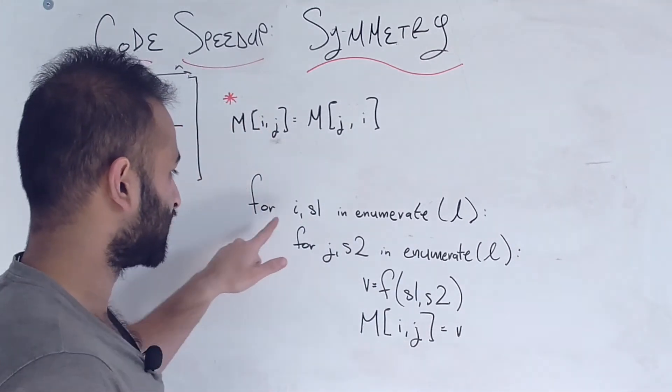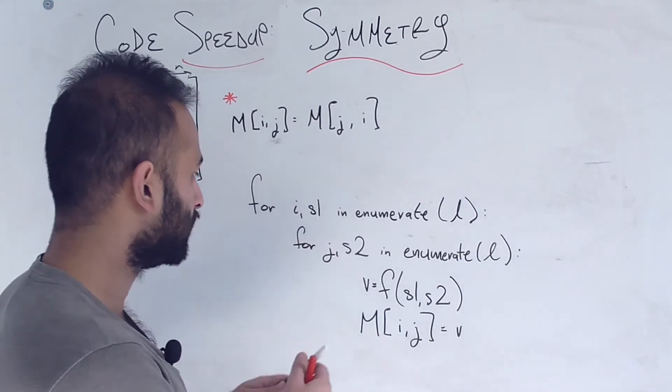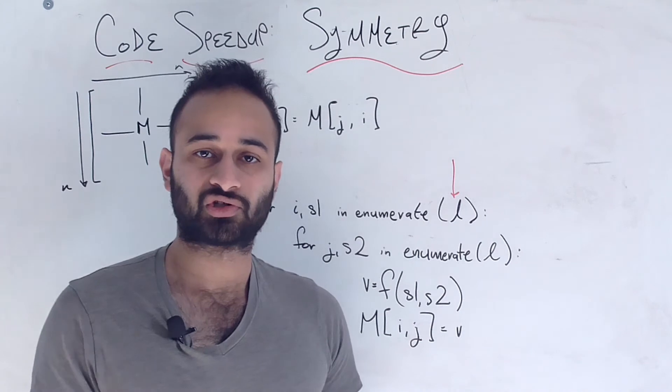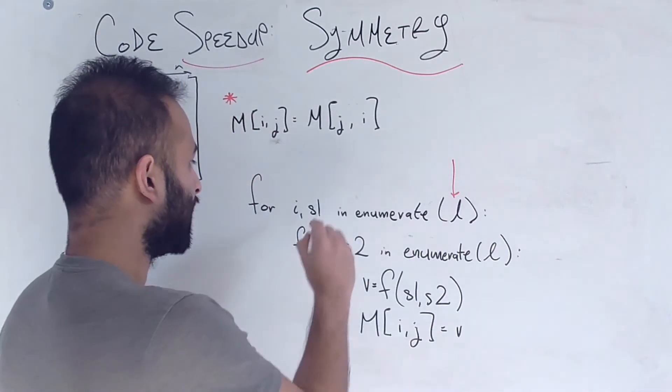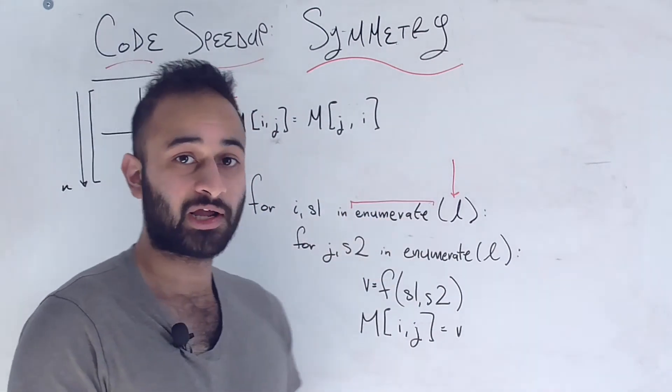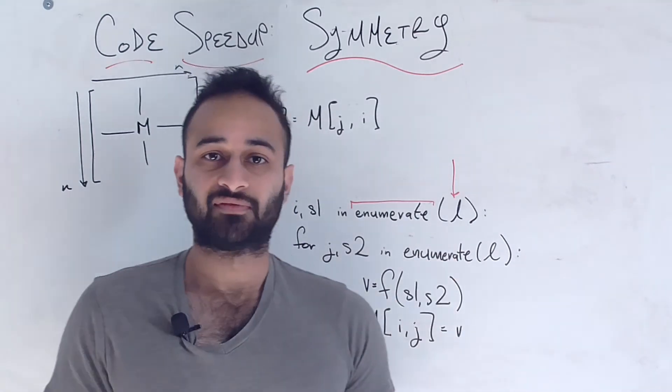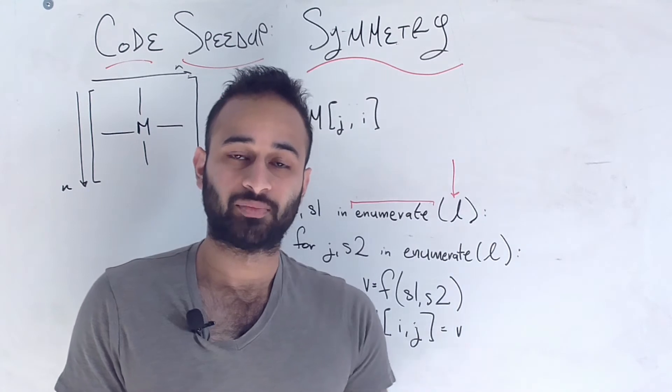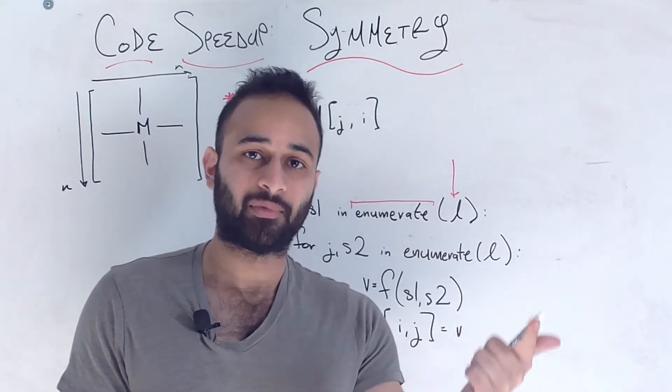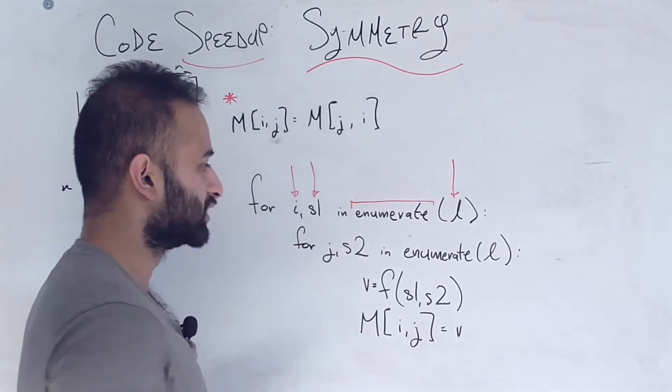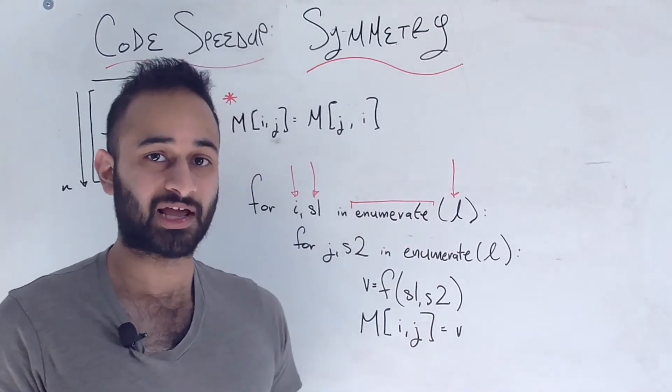So we iterate, we say for i comma s1 in enumerate. And then let's say this l is my list of students or list of whatever I care about. And then this keyword, if you haven't seen it in Python, enumerate. It's really cool. If you put enumerate and you put a list in there, it gives you back each time in the iteration. It gives you back the index of that element and the element itself. So i is the index of a student and s1 is the student itself. So it's really nice feature.